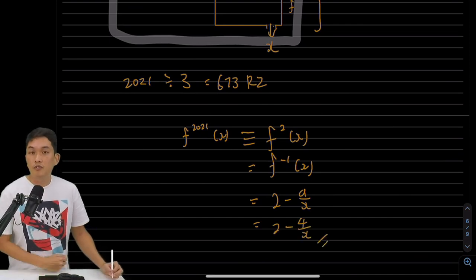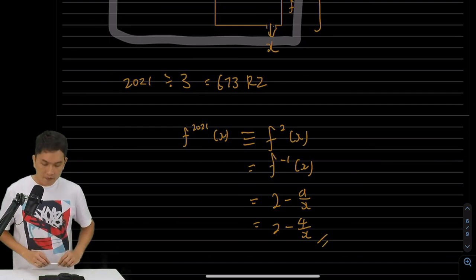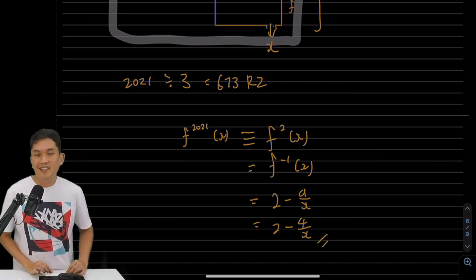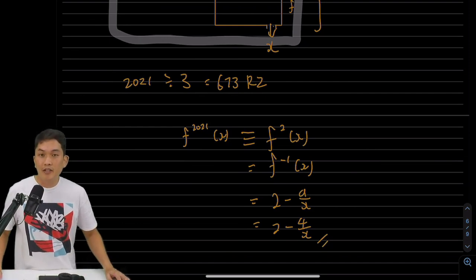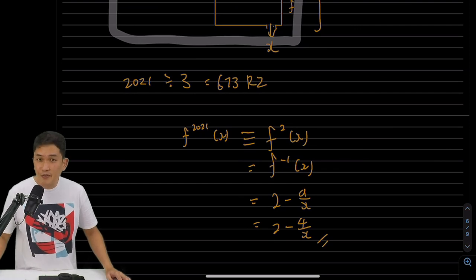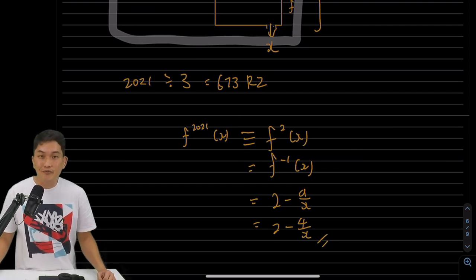And this is f of 2021 of x, 2 minus 4 over x. So that is question 3, part 2 and part 3. I hope you found this useful, and I'll see you in question 4.